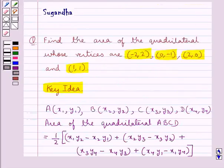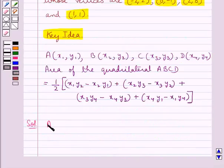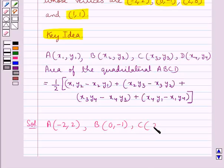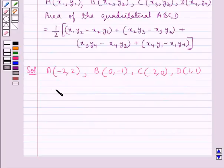We are given the four vertices of the quadrilateral and we are supposed to find the area of this quadrilateral. Suppose we have vertex A with coordinates (-2, 2), B with coordinates (0, -1), C with coordinates (2, 0), and D with coordinates (1, 1). So from here we have x₁ is -2.